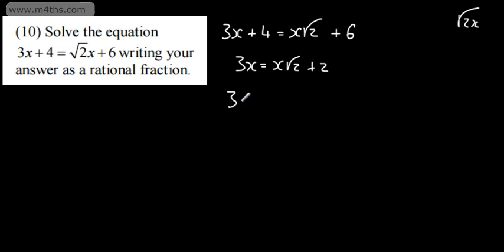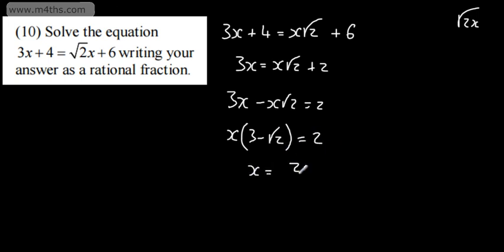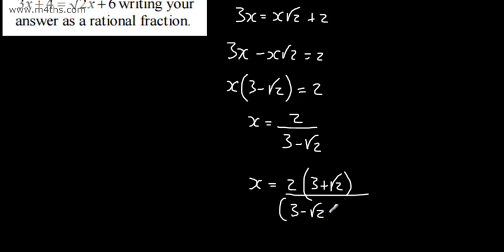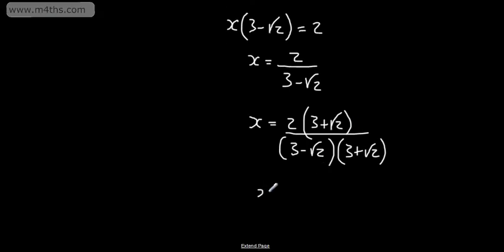Collecting like terms on the left-hand side: 3x minus x root 2 is equal to 2. Factoring the x out, we've got x times 3 minus root 2, and that's equal to 2. We can write that x is equal to 2 over 3 minus root 2. It's asking us for a rational fraction. In a previous video we looked at rationalizing the denominator of the fraction. So we're going to multiply this by the conjugate — create a difference of squares by multiplying numerator and denominator by the same values but with the sign changed.